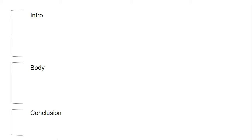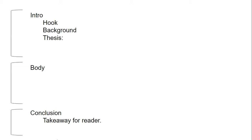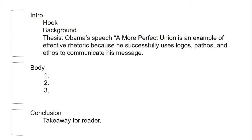Pull up a document and mark out sections. You know you're going to have an intro, a body, and a conclusion, with certain things in each area. In your intro, you'll have some kind of hook, background on the text and your perspective on it, and your thesis. Your conclusion will contain a takeaway — answering the 'so what?' question: what's the larger point? Then fill in your thesis: 'Obama's speech, A More Perfect Union, is an example of effective rhetoric because he successfully uses logos, pathos, and ethos to communicate his message.'